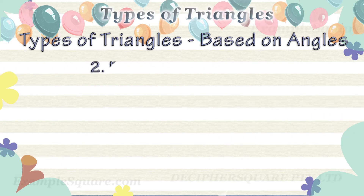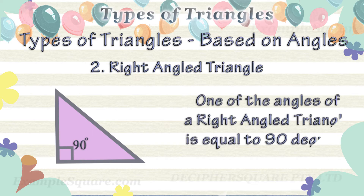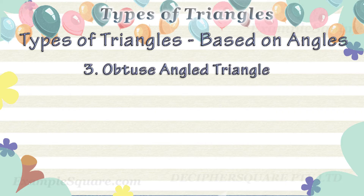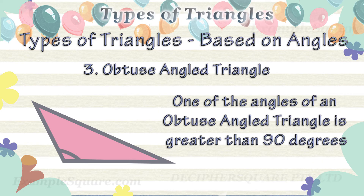A triangle in which one of the interior angles is equal to 90 degrees is called a right triangle or a right angled triangle. A triangle in which one of the interior angles is greater than 90 degrees is called an obtuse triangle or an obtuse angled triangle.